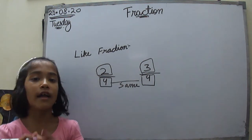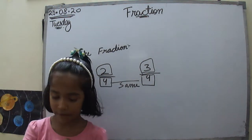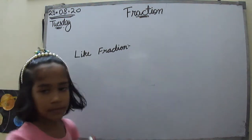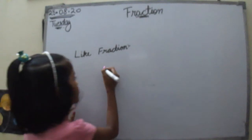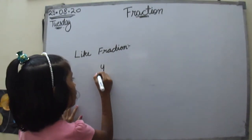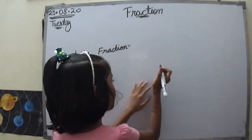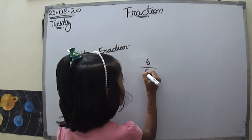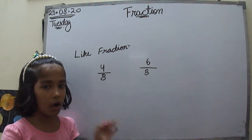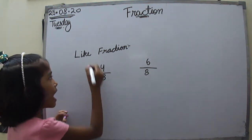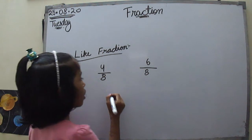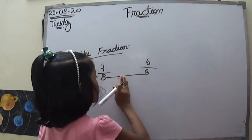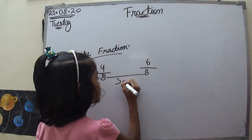Let's take another example of like fractions. Take 4 upon 8, and then 6 by 8. These are also called like fractions because the denominators are the same.